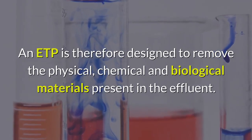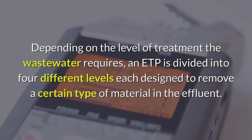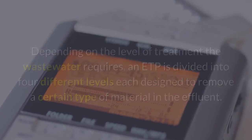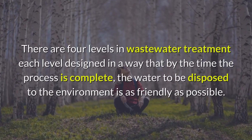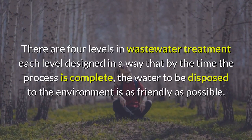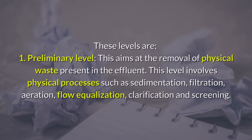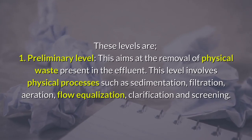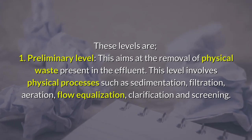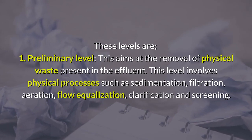An ETP is therefore designed to remove the physical, chemical, and biological materials present in the effluent. Depending on the level of treatment the wastewater requires, an ETP is divided into four different levels, each designed to remove a certain type of material in the effluent. The first is the preliminary level, which aims at the removal of physical waste present in the effluent. This level involves physical processes such as sedimentation, filtration, aeration, flow equalization, clarification, and screening.